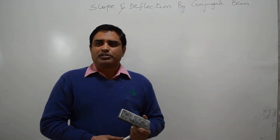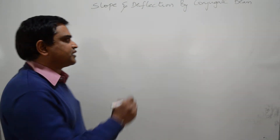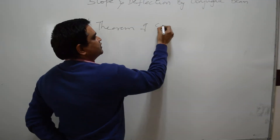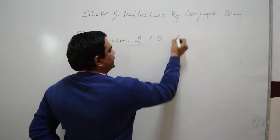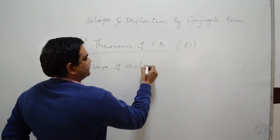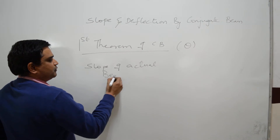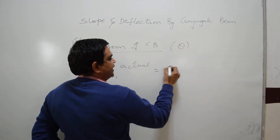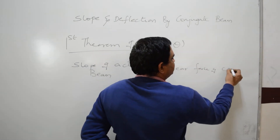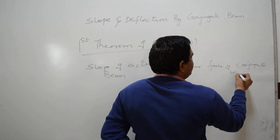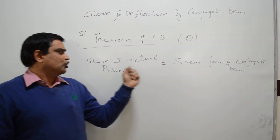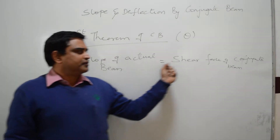The conjugate beam method is based on two theorems of Mohr. The first theorem of the conjugate beam gives the value of slope, denoted as theta. The slope of the actual beam is equal to the shear force of the conjugate beam. This is the first theorem of the conjugate beam.